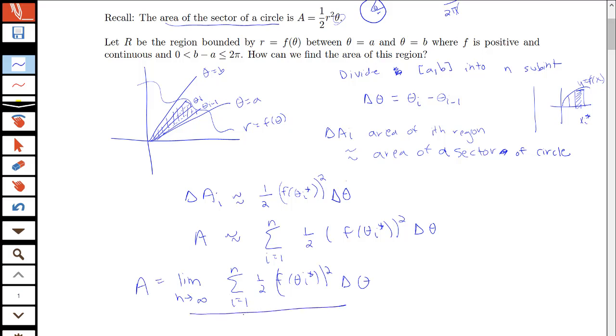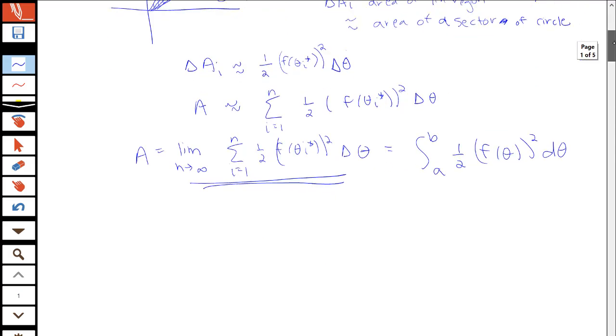And then I recognize this as a limit of a Riemann sum, so I know this is equal to a definite integral here. Over my interval from a to b of one-half f of theta squared, and then this delta theta here becomes the d theta in my limit.